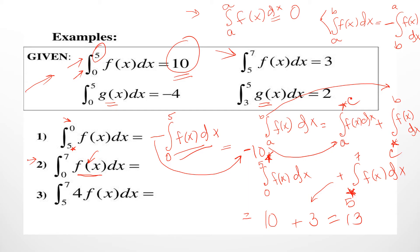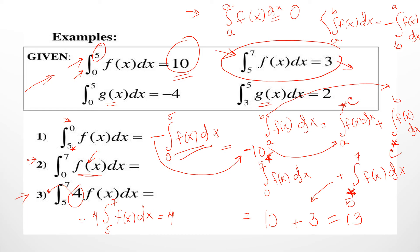Now question number 3: from 5 to 7, 4·f(x) dx. The 4 is a constant, so bring it outside according to the k·f(x) property. You write 4 times the integral from 5 to 7 of f(x) dx. From the given data, that integral equals 3, so 4 times 3 equals 12. That is the answer.